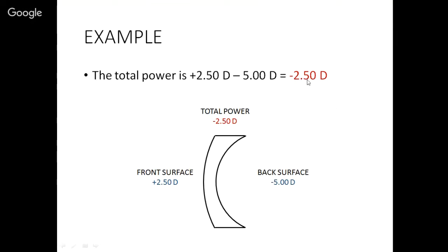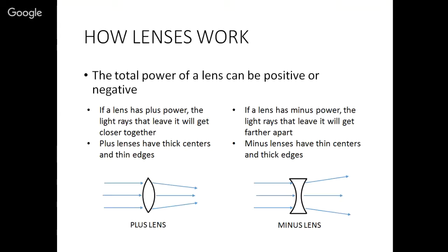So note that this power can be actually positive or negative. Let me just briefly explain the difference between a lens with plus power and a lens with minus power. If you've got a lens with plus power, the rays that leave that lens are going to move closer together. And if you have a lens with minus power, the rays that leave the lens are going to move farther apart. You can tell whether a lens is plus or minus by its shape. Plus lenses are thick in the middle and thin on the edges. Minus lenses are thin in the middle and thick on the edges.